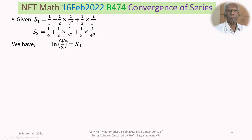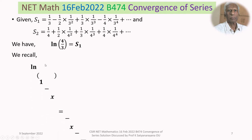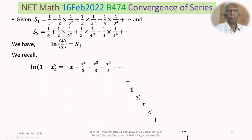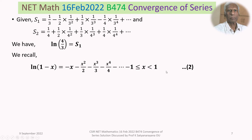We have seen that ln(4/3) equals S1. We now recall the identity: ln(1−x) equals minus x minus x²/2 minus x³/3 minus x⁴/4, minus so on and so forth, valid for minus 1 less than or equal to x less than 1. Call this equation 2.